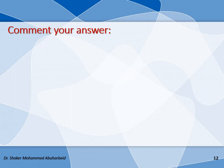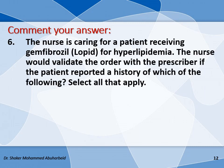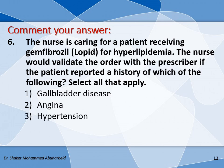Here is the last question — I will not give the answer, but please comment your answer below. The nurse is caring for a patient receiving gemfibrozil for hyperlipidemia. The nurse would validate the order with the prescriber if the patient reported a history of which of the following? Select all that apply. Options: gallbladder disease, angina, hypertension, diabetes, and renal disease. Please comment your answer and write your name.